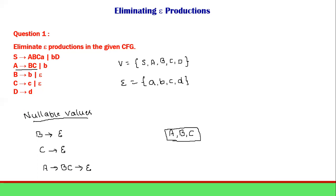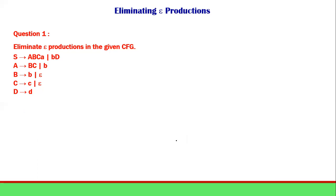So we have three nullable values: A, B, and C. Wherever we find A, B, or C, we will have to replace them with epsilon. Let us check the first production: S deriving A, B, C, a. You write it as it is, and in the next line write the next production of S, which is B and D.